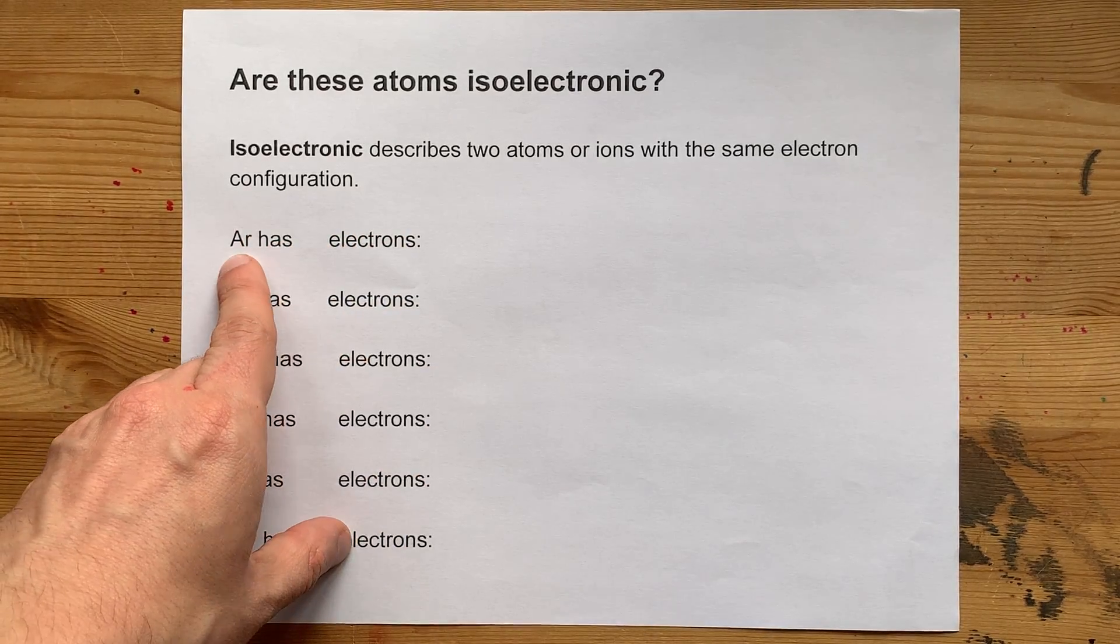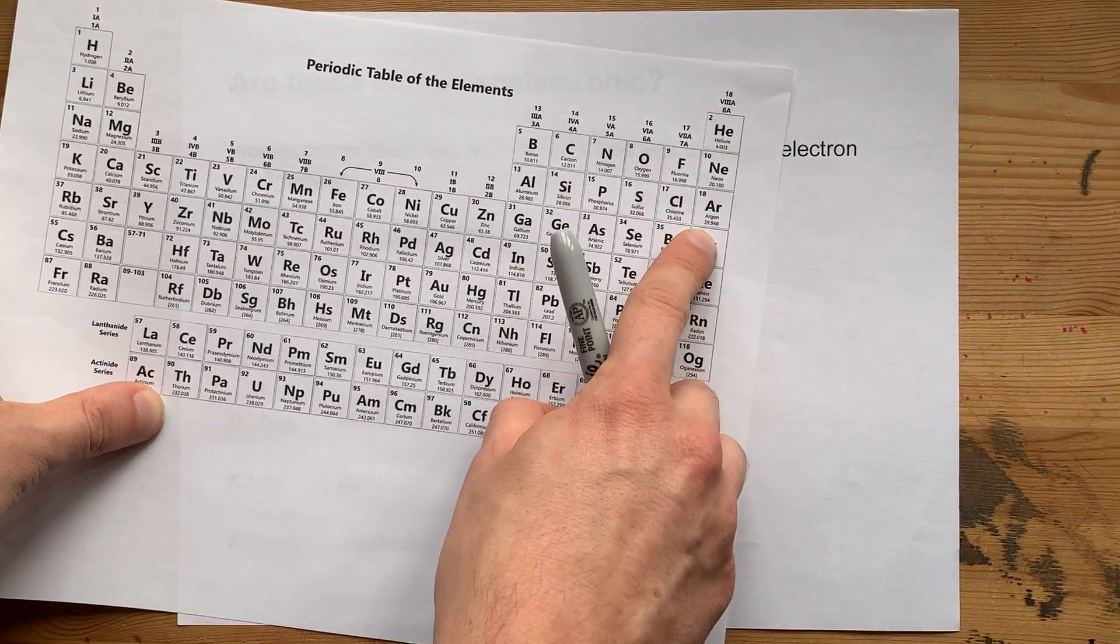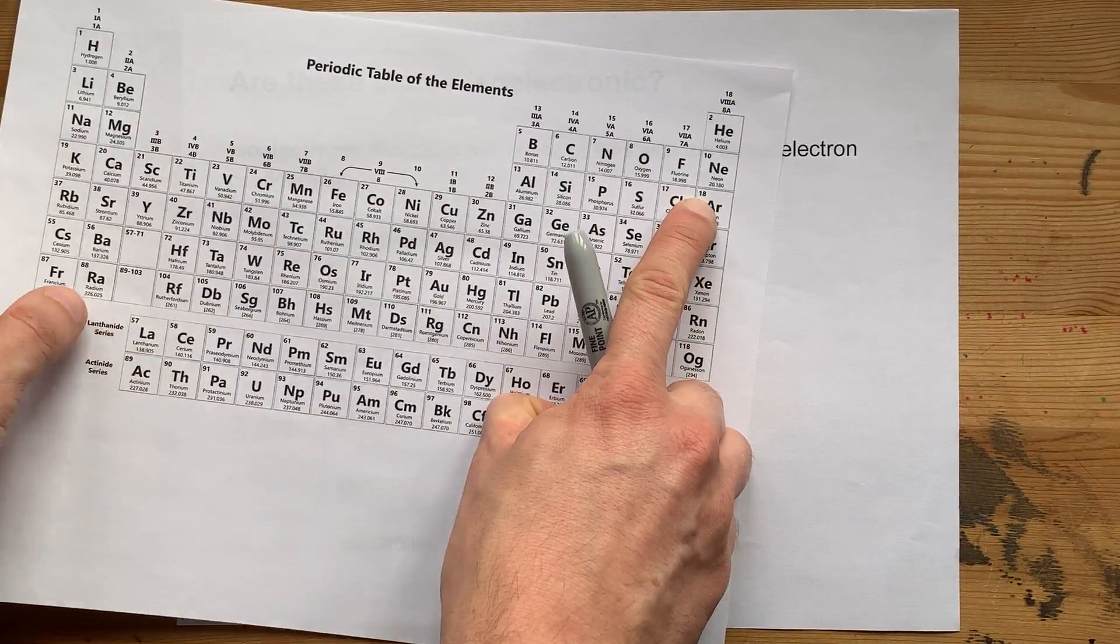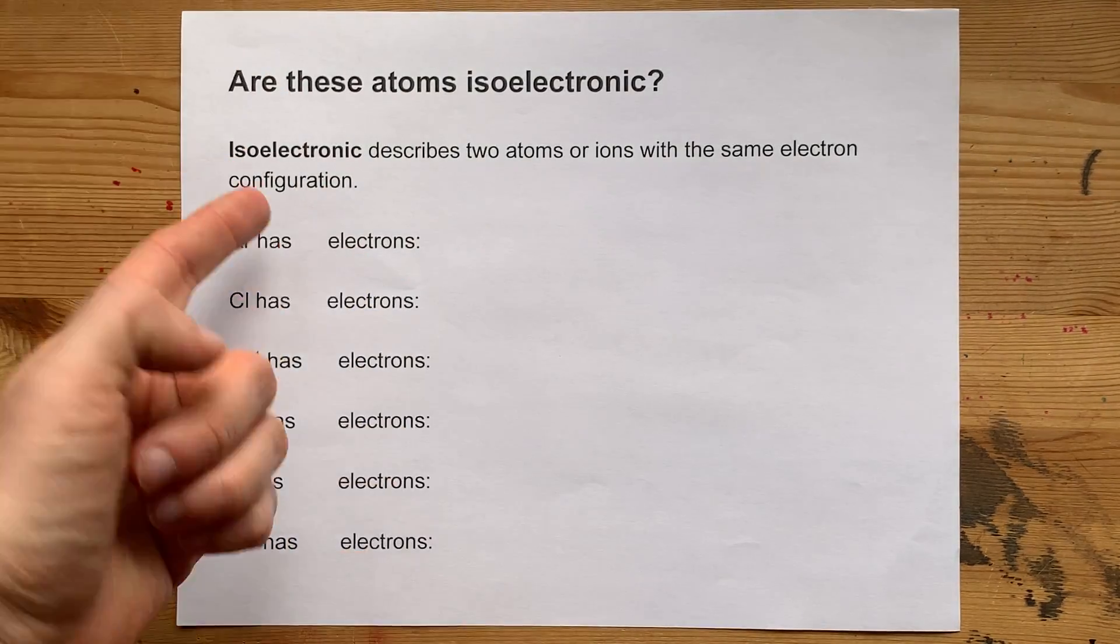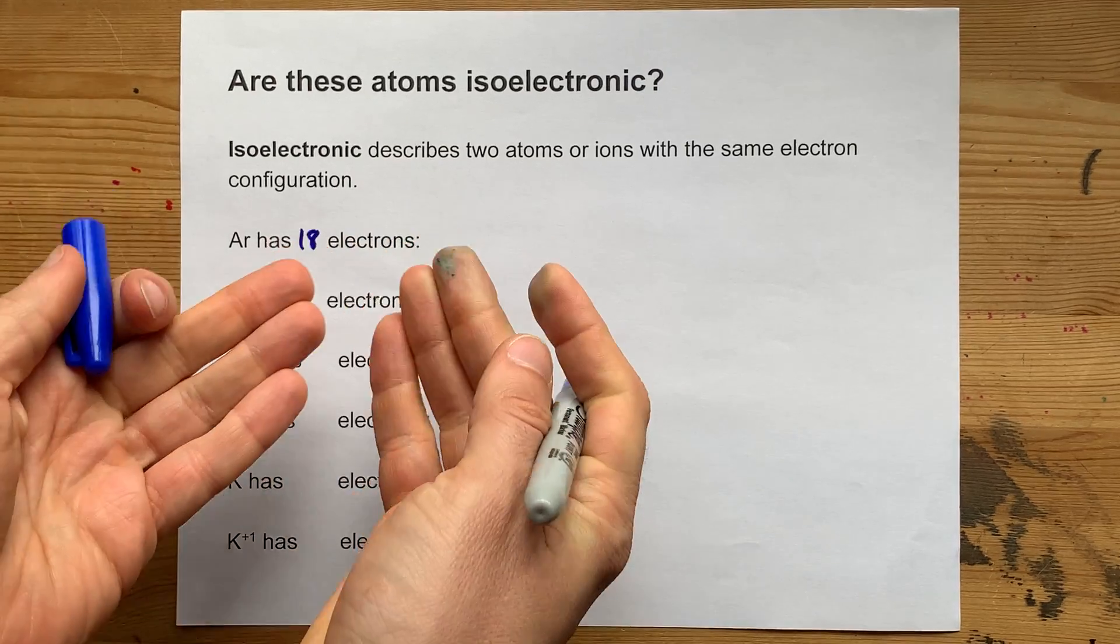Here are some examples. Ar, argon, is here on the periodic table, is element number 18. It itself, when it is neutral, has 18 electrons.